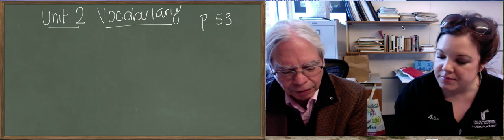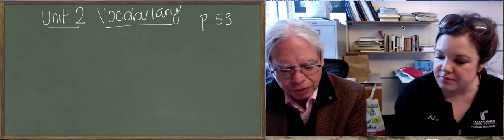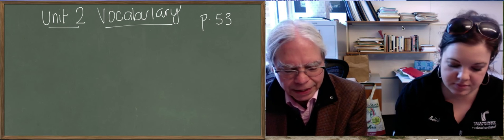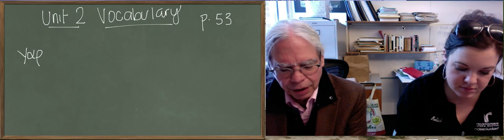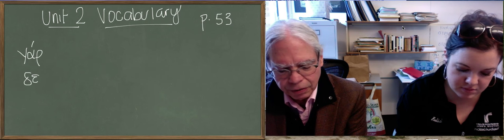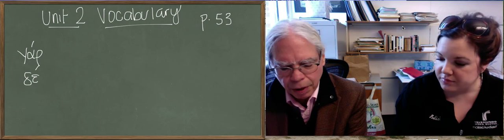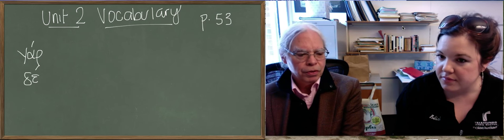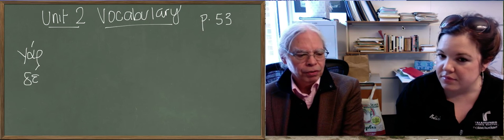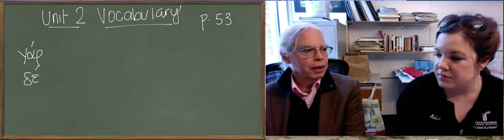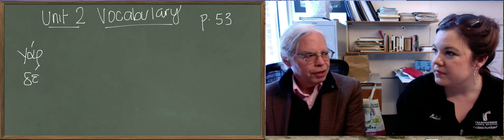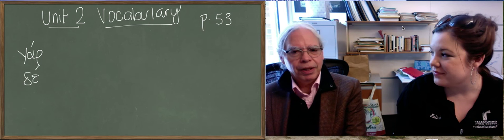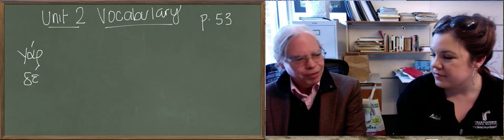We talked about ara already, the particle introduces a question. The next two words, gar and de, these are one-syllable words. And it says about them in parentheses that they are post-positive conjunctions. So a conjunction is a word that ties one sentence or one complete grammatical unit to another. And post-positive means that they can't come first in a sentence.